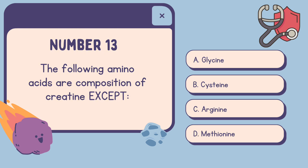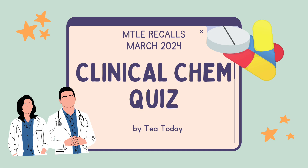Number 13: The following amino acids are compositions of creatine, except — A. Glycine, B. Cysteine, C. Arginine, D. Methionine. The correct answer is B, Cysteine. That's all for this video — don't forget to like, share, and comment for more upcoming MTLE recalls. Good luck!